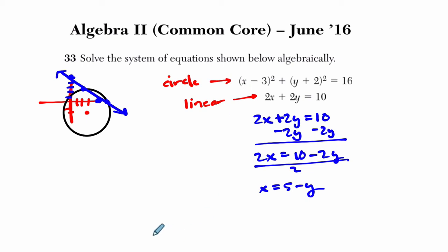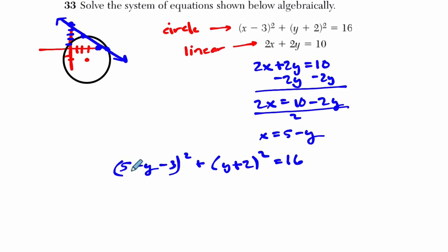So instead of X, I've got 5 minus Y. 5 minus Y minus 3 squared plus Y plus 2 squared equals 16. And now I start simplifying things. We have 5 minus 3 is 2. So 2 minus Y squared. And Y plus 2 squared equals 16. So now I'm going to simplify this and solve for Y.